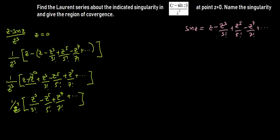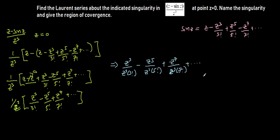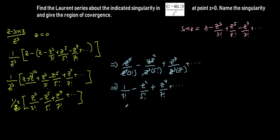Let's open the bracket now: z³ over z³ times 3 factorial, minus z⁵ over z³ times 5 factorial, plus z⁷ over z³ times 7 factorial, and so on to infinity. After dividing, we are left with 1 over 3 factorial, minus z² over 5 factorial, plus z⁴ over 7 factorial, continuing to infinity. This is the Laurent series expansion of the indicated singularity.